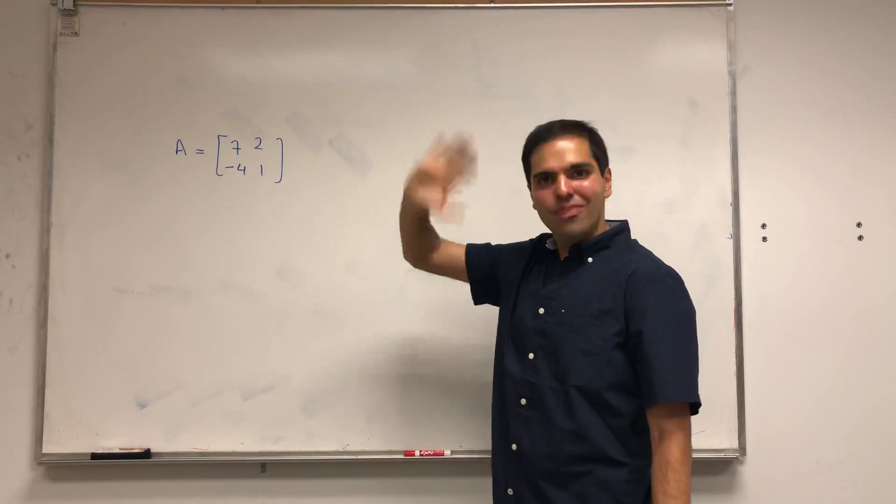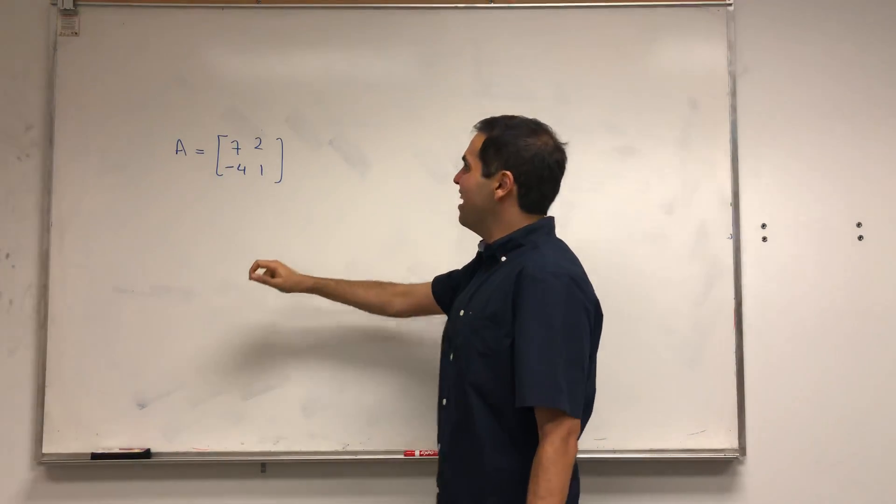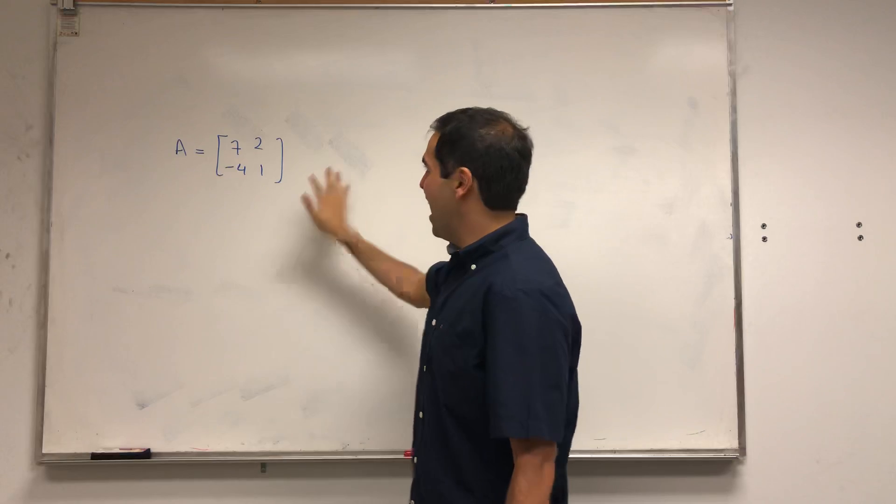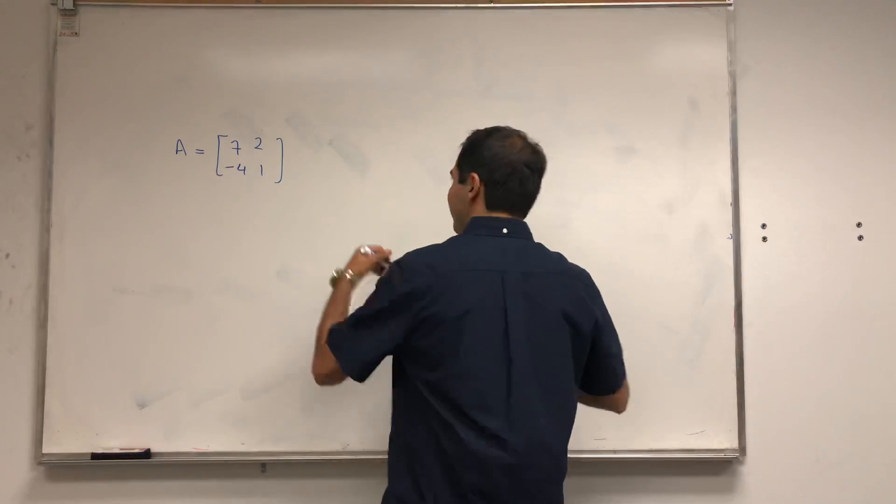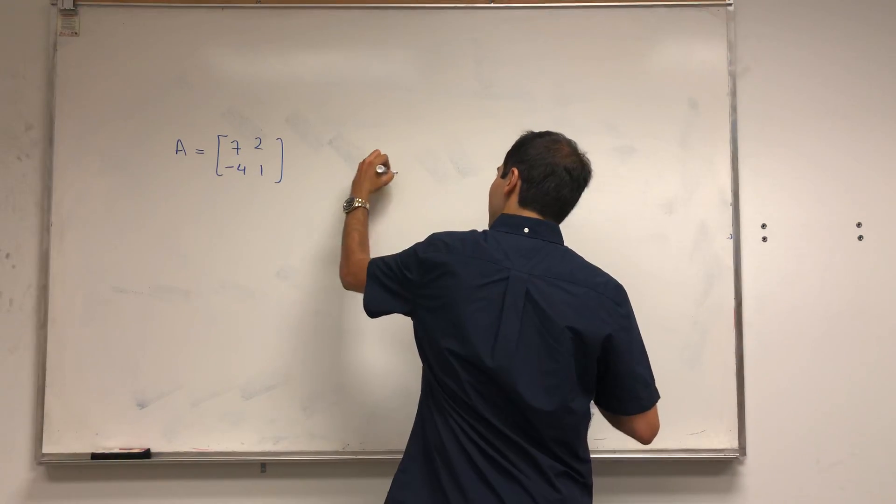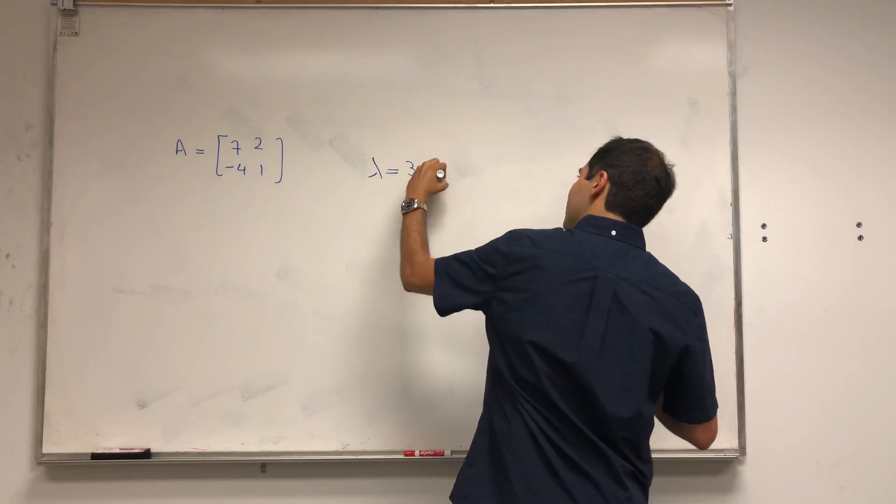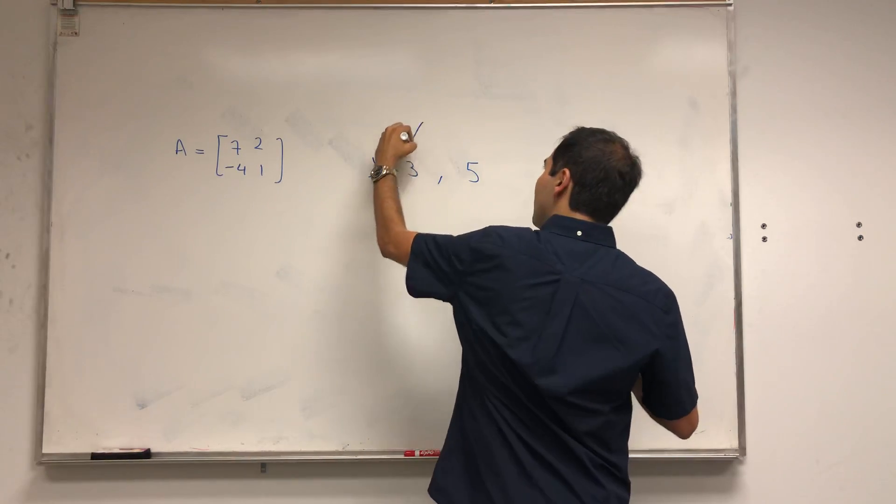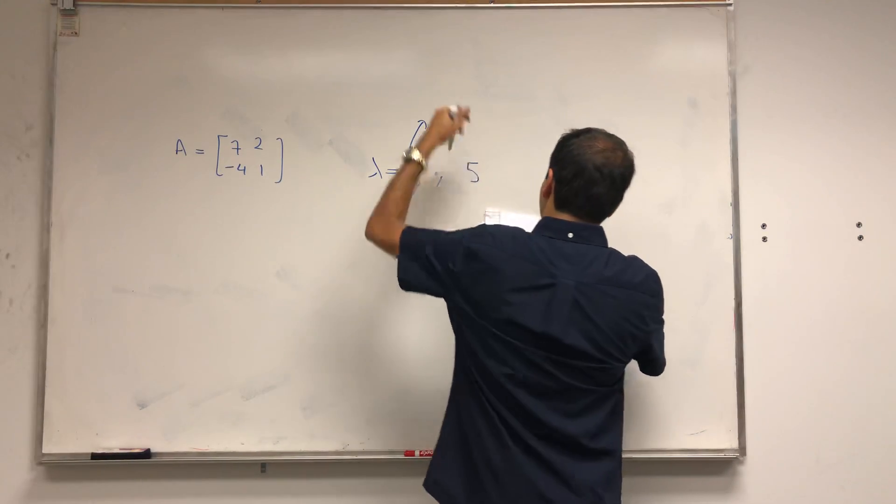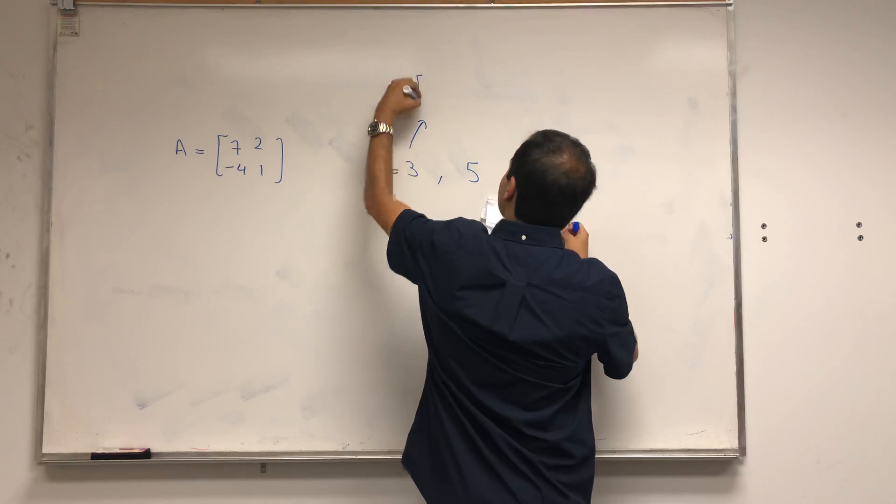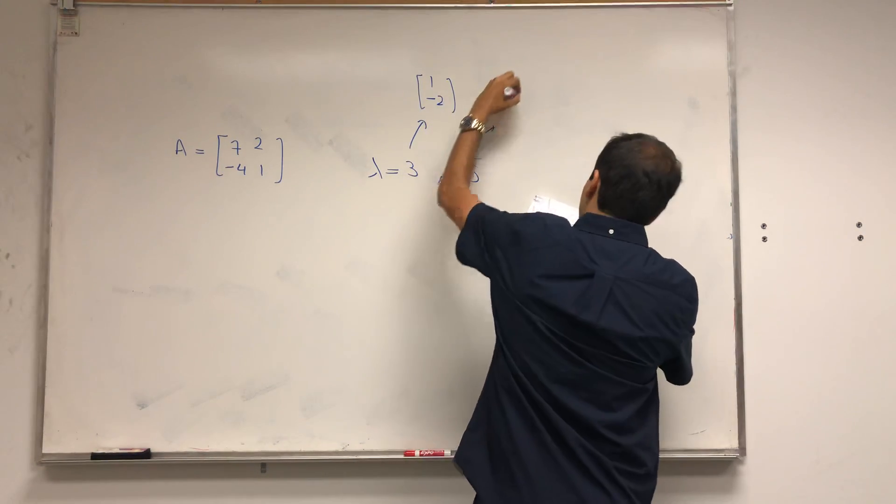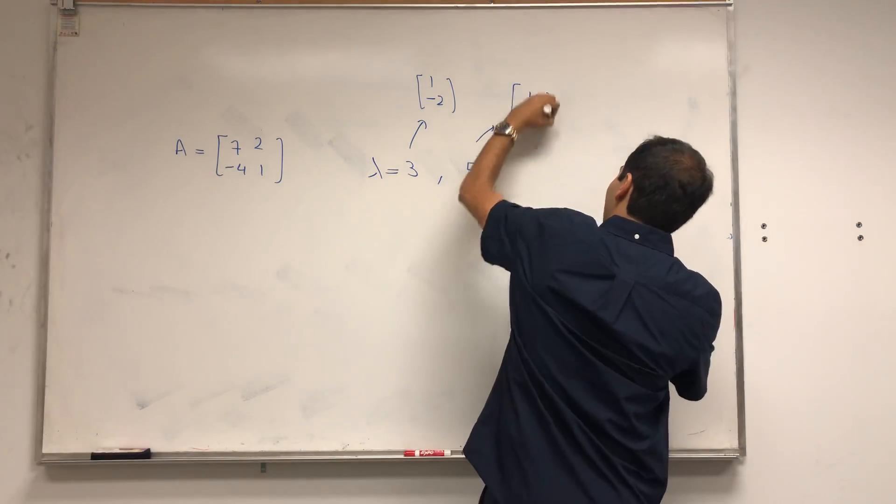If you recall in a previous video I did, I took the matrix A and I found the eigenvalues and eigenvectors. I found that the eigenvalues are 3 and 5, and the corresponding eigenvectors are [1, -2] and [1, -1], up to multiples.